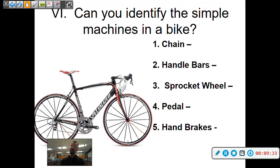Parts of the bike. So we have the chain, we have the handlebars, the sprocket wheel, the pedal, and the hand brakes. So what are these in terms of simple machines?